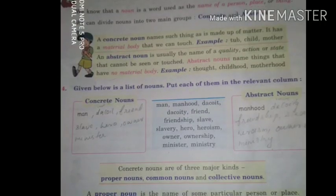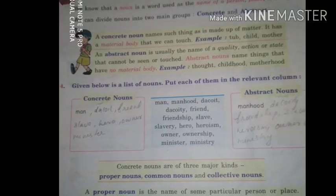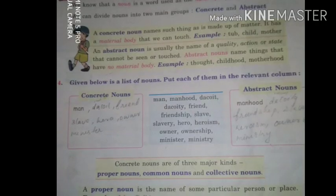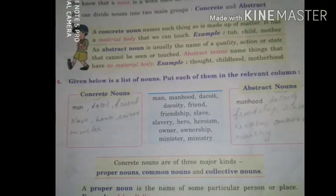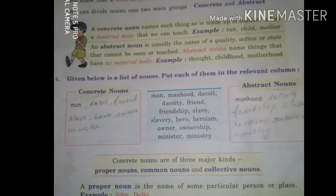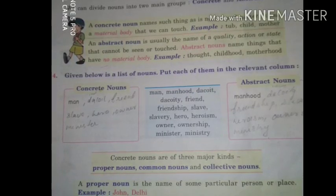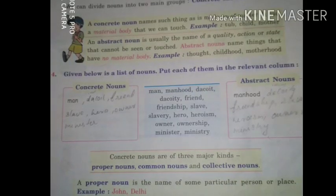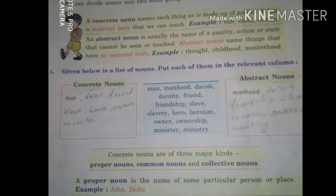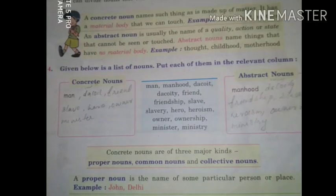An abstract noun is not like that. An abstract noun is usually the name of a quality, action, or state that cannot be seen or touched. Abstract nouns name things that have no material body. Examples: thought, childhood, motherhood. Think about 'thought' itself — it means thinking, and we can't touch that activity. Such things are called abstract nouns.